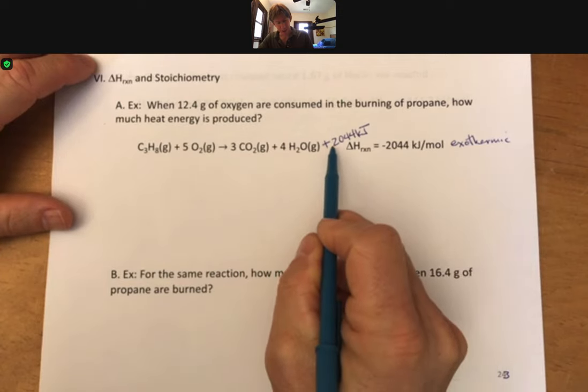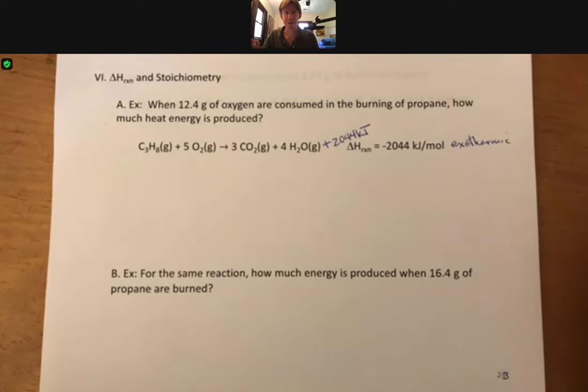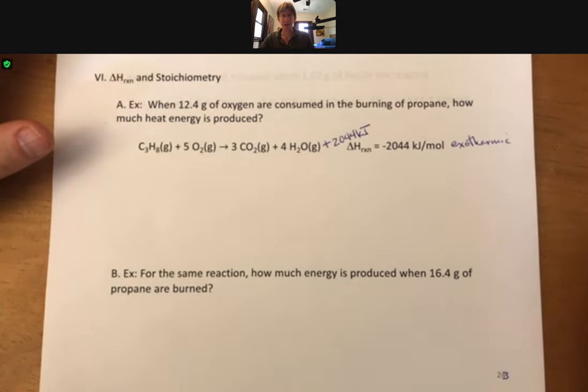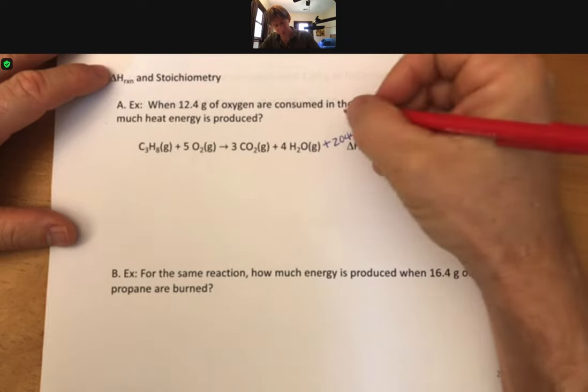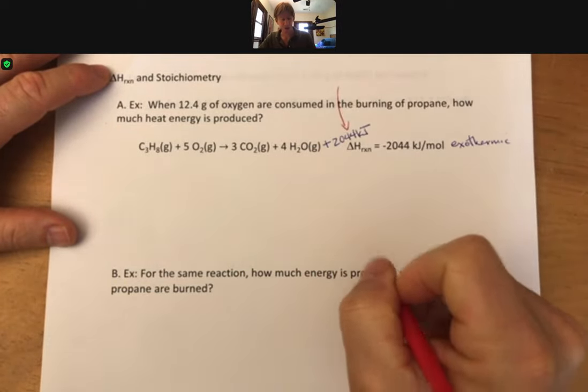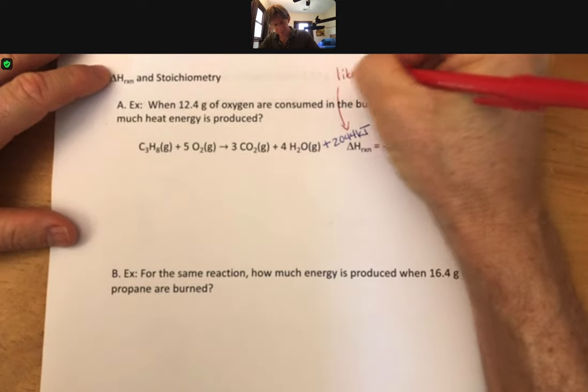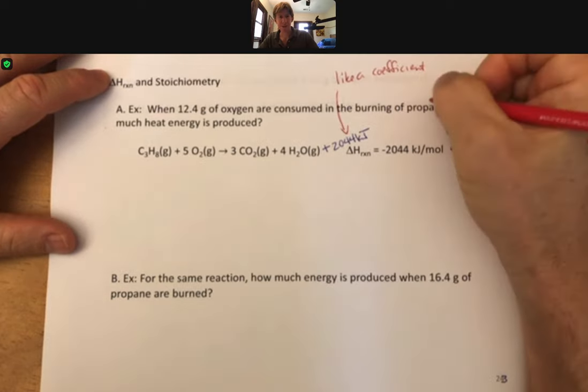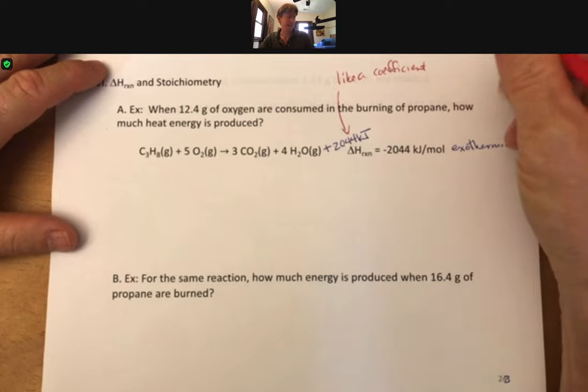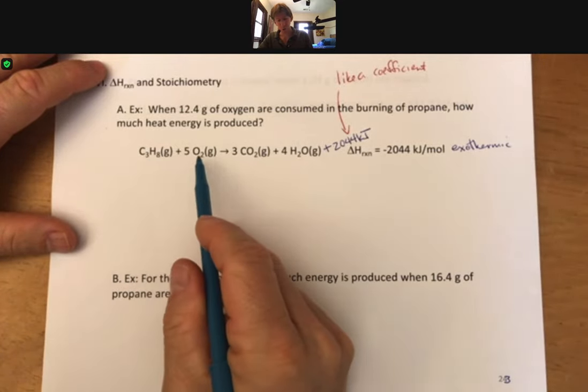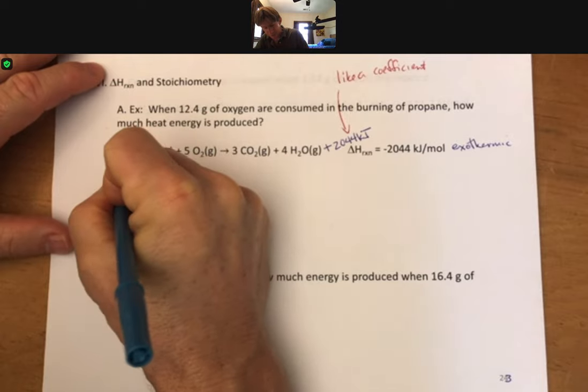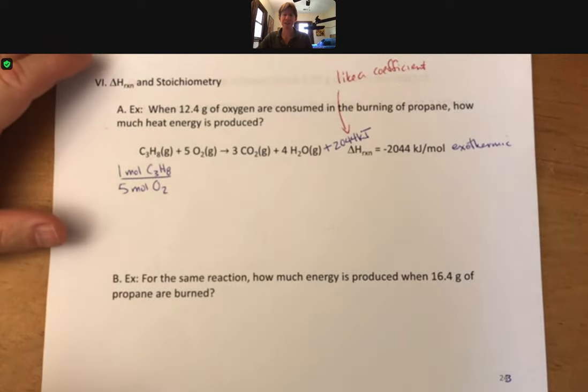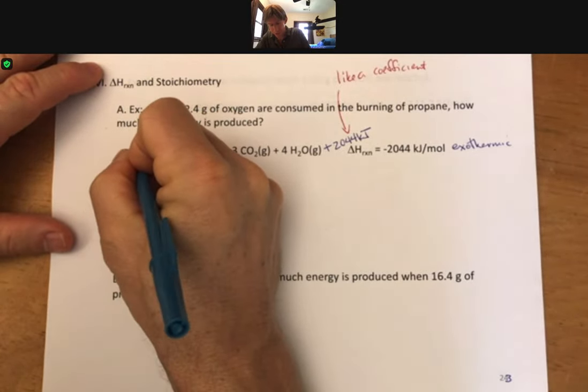Now, if we're given 12.4 grams of oxygen, we're going to turn it into moles. But let's talk about what we do with the energy now, and how we use energy as a unit conversion factor. I like to think of the number 2044 kilojoules as like a coefficient. Whenever you do a mole to mole conversion, you use the coefficients, right? So 1 mole C3H8, 5 moles O2.